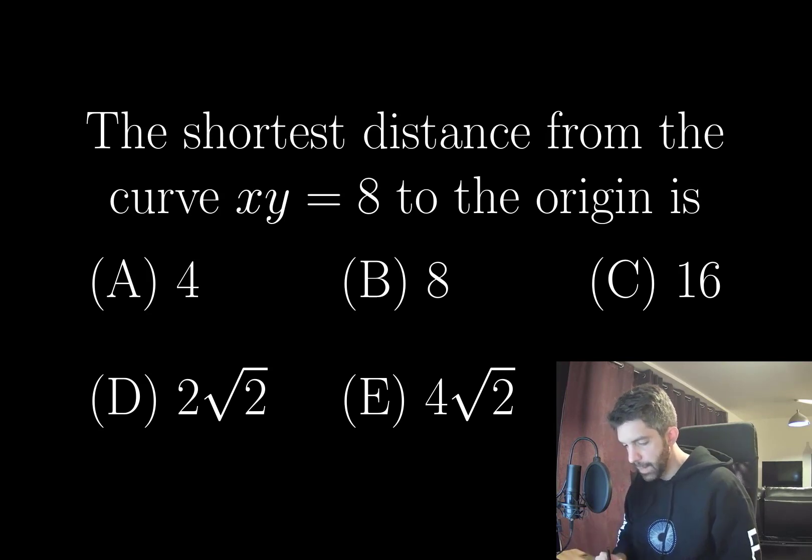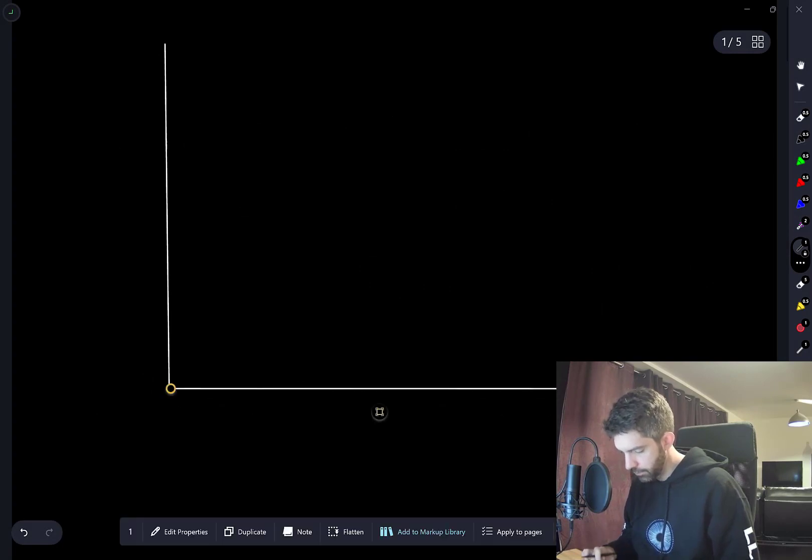I will draw a picture though. I'm only going to draw this for positive values of x and y. It's going to be symmetric. So this minimum distance will be achieved at two different points, but it will just be a reflection through the origin.